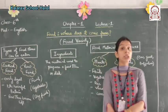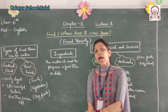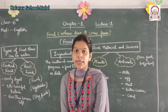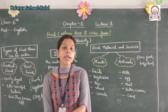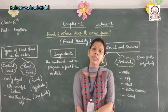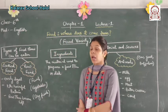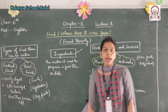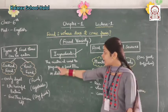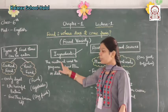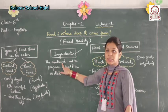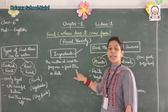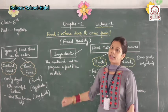The next question is: what are the ingredients required to make food items? What are ingredients? Ingredients are the materials used to prepare a food item or dish.